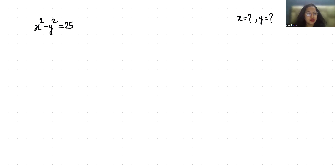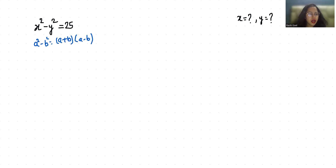Let's start with today's video solution. Here I'm going to use the identity a squared minus b squared, which is equal to a plus b times a minus b. So we can write it as x plus y times x minus y.